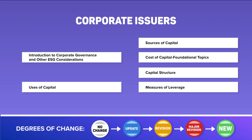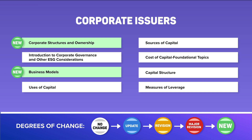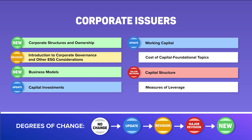For starters, there are two new learning modules called Corporate Structures and Ownership and Business Models. Uses of Capital has been updated and will now be called Capital Investments. Sources of Capital has also been updated and will now be called Working Capital. Intro to Corporate Governance and other ESG considerations has been revised, and Capital Structure has undergone major revisions. So quite a few changes from the previous curriculum.